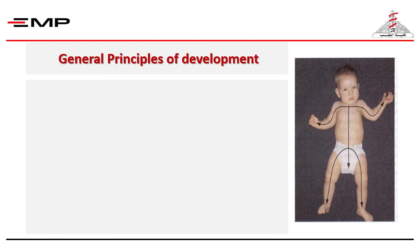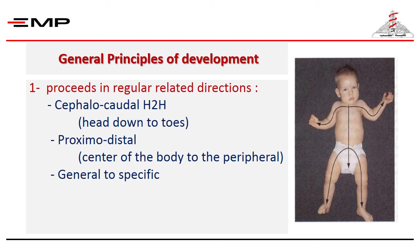It is also useful to know these principles concerning development to be able to memorize the sequence of events that occur at every stage of different aspects of development. First, development proceeds in a cephalocaudal pattern — that's from head to toes — and a proximodistal pattern — that's from the center of the body to the peripheral — and from general to specific movement. This is related to CNS and peripheral nerve myelination. So the child will first be able to control muscles of the neck, then the trunk, then the lower limbs. Also, he will be able to move the general big muscles first, then the more sophisticated fine motor movements of the small muscles of the hands.